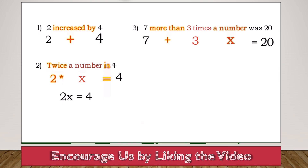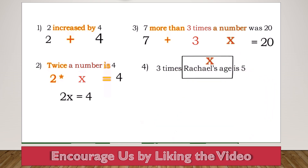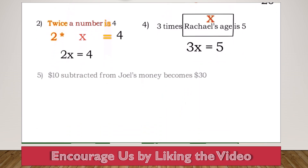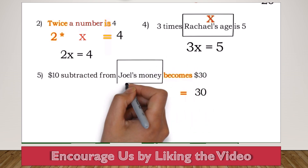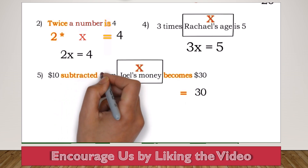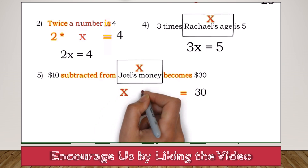Our unknown doesn't always have to be represented by a generic number. For example, '3 times Rachel's age is 5' — here the unknown is Rachel's age, so we represent it by x. This will be 3x equals 5. If we have '$10 subtracted from Joel's money becomes $30,' 'becomes' means equals, so we have equals 30. Joel's money is our unknown, represented by x. Remember, when you have 'subtracted from,' you write the second thing first, so '10 subtracted from Joel's money' is x minus 10, giving x minus 10 equals 30.